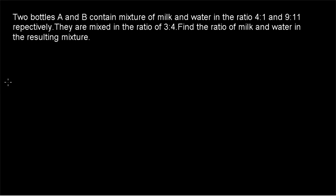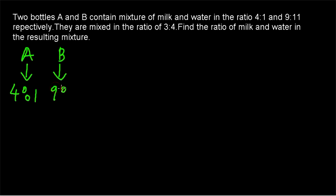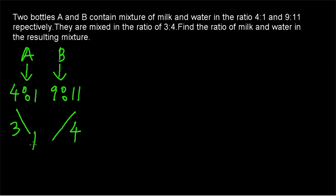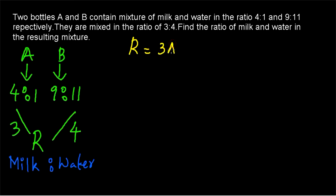So what is the question? Given there are two bottles A and B, both containing a mixture of milk and water. A has milk and water in the ratio 4:1, and B has milk and water in the ratio 9:11. These two are mixed together — 3 parts of A and 4 parts of B — to form a resulting mixture. I am representing this resulting mixture by R, so R is formed by mixing 3A and 4B.